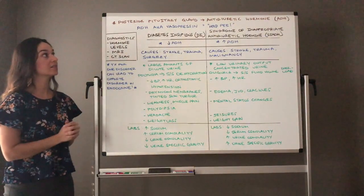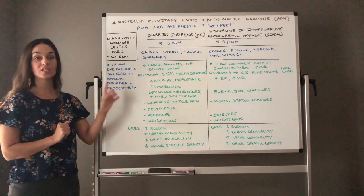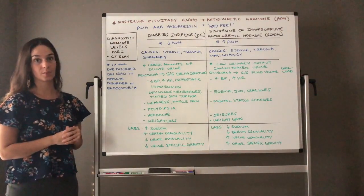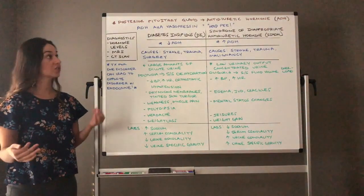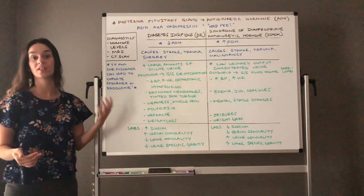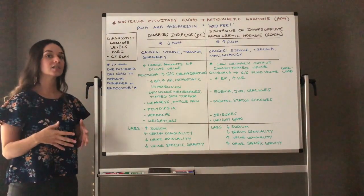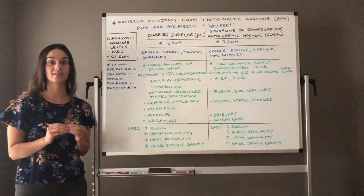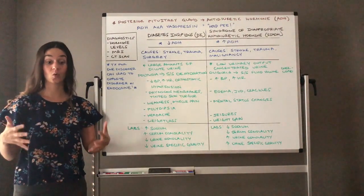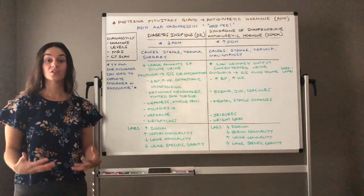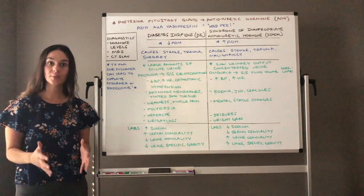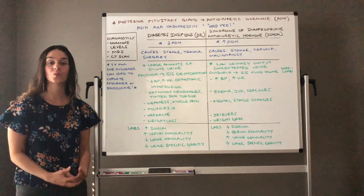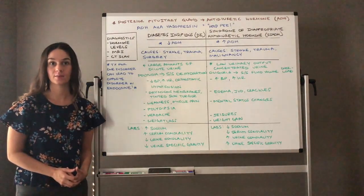So we're talking about the posterior pituitary gland today, which secretes antidiuretic hormone, aka ADH. You might have also heard of it as vasopressin. I want you to think anti-diuretic, anti-diuresis, meaning no pee or holding on to pee. So if you think about that, the purpose of ADH is to reabsorb water in the kidneys.